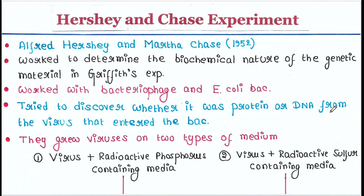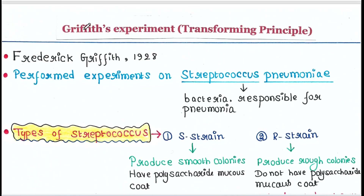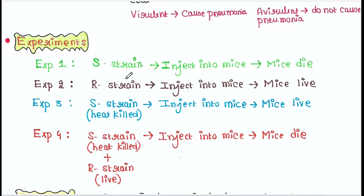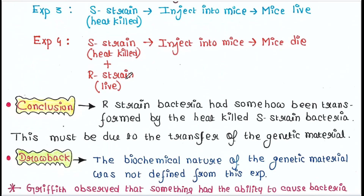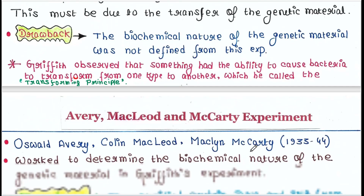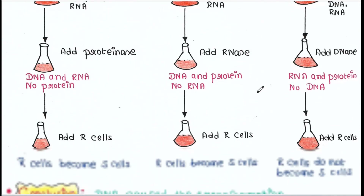In our previous lecture we have already discussed Griffith's experiment. In that experiment we saw that a particular genetic material was transferred from the S strain to the R strain bacteria, although the biochemical nature of the genetic material was not defined. To determine the genetic material, Avery, MacLeod, and McCarty worked hard and proven that the genetic material was nothing but DNA.